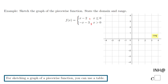First I'm going to start with something easy — the domain of this piecewise function. Looking at the two conditions: the first says x is less than or equal to 0, and the second says x is greater than 0. Since x represents the domain, the union of these two gives us all real numbers.